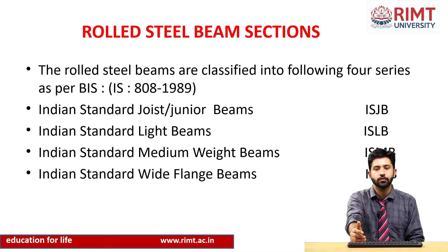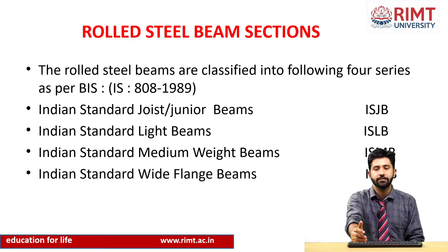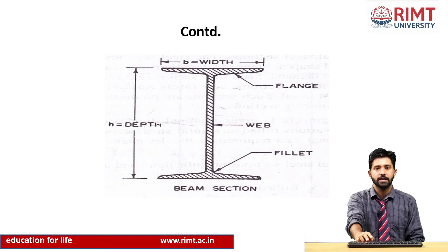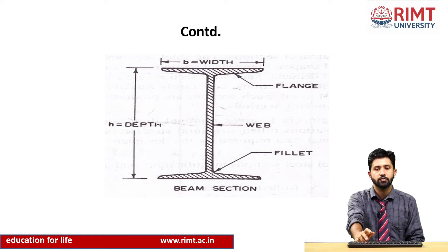Indian Standard Junior beams is ISJB, Indian Standard Light beams are ISLB, Indian Standard medium weight beams are ISMB, and Indian Standard wide flange beams are ISWB. In an I section, the vertical part is known as the web, and the upper and lower horizontal parts are known as the flanges. The overall height of this section is the depth of the section.